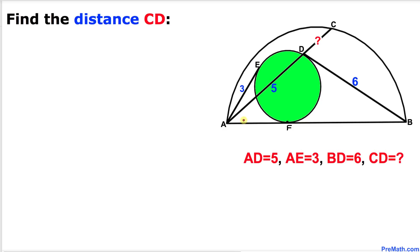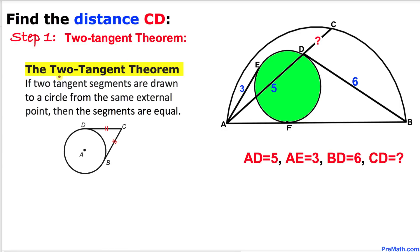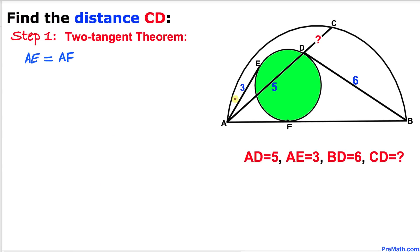Let's get started with the solution. Our very first step is to recall the Two Tangent Theorem: if two tangent segments are drawn to a circle from the same external point, then the segments are equal. According to this theorem, line segment AE equals line segment AF. Since AE is 3 units, AF is also 3 units.